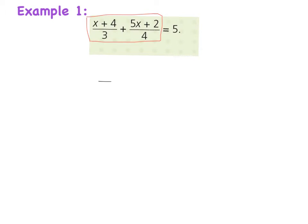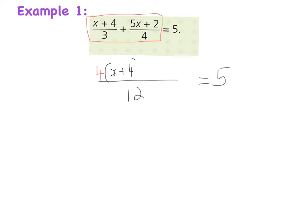I'll put equals 5 here and follow the same process. I look and say 3 goes into 12 four times, and it's 4 multiplied by whatever's on top, which in this case is (x + 4).